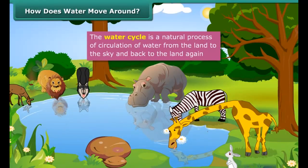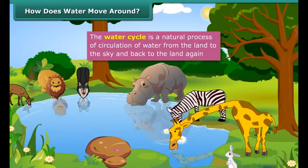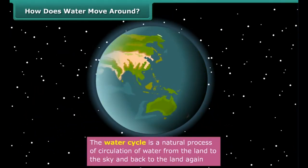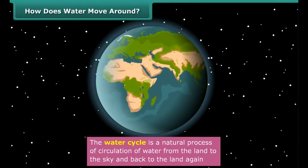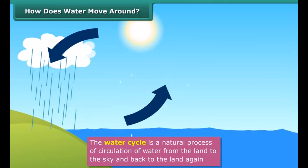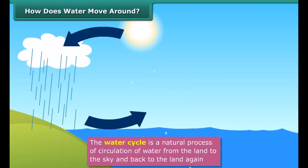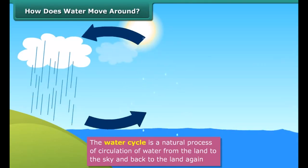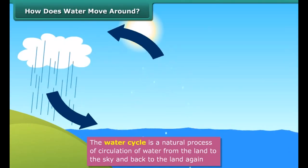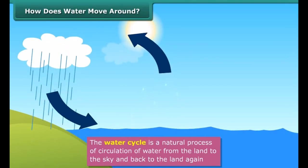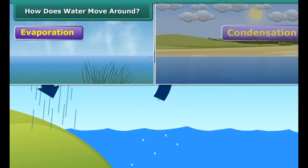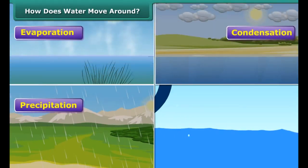Have you wondered how, despite consumption of water by living things on earth for hundreds of years, the balance of water on the planet has been maintained? It is the water cycle which makes it possible. The repeated changing of water in nature from liquid to gaseous form and then back to liquid form is called the water cycle. There are four main steps: evaporation, condensation, precipitation and collection.